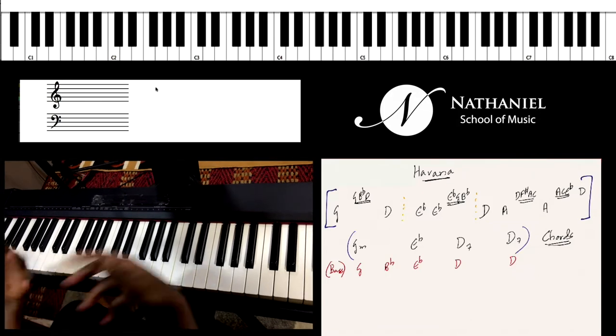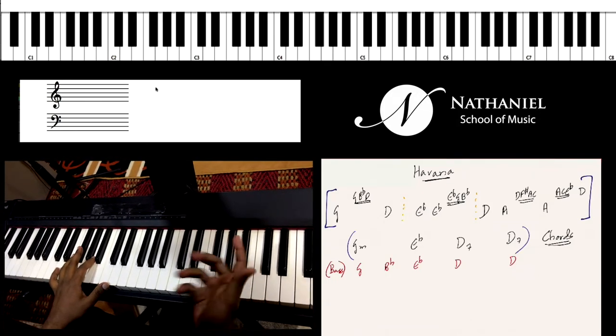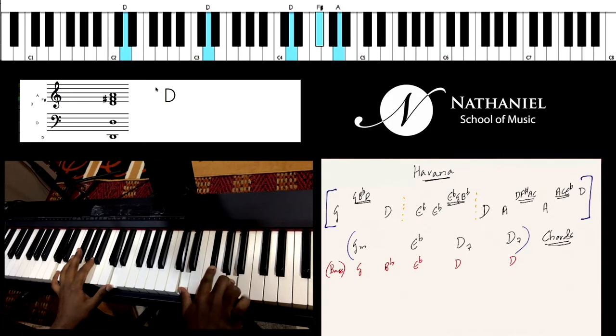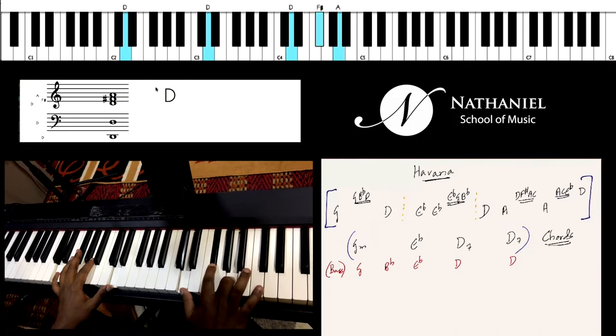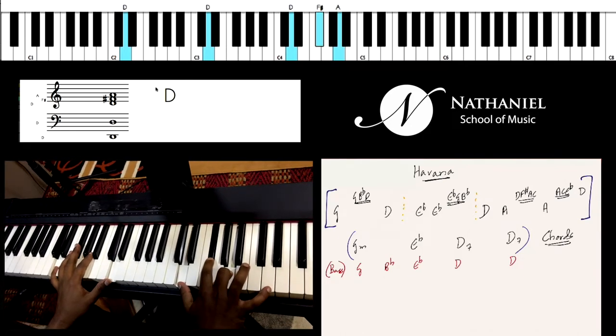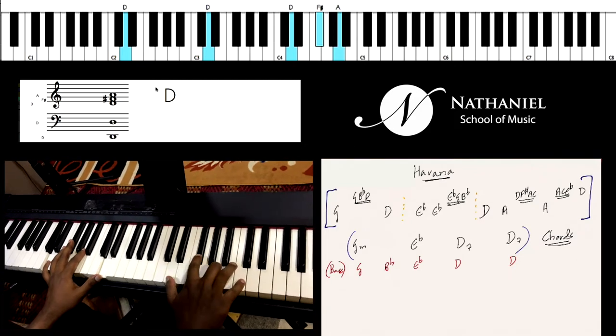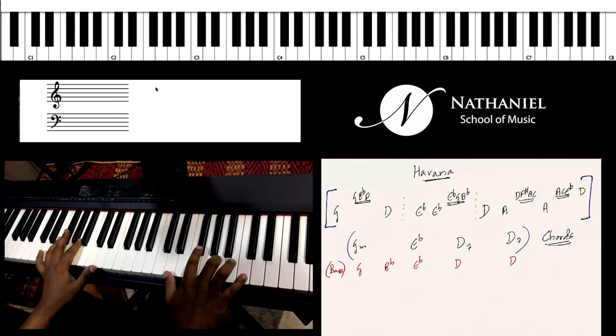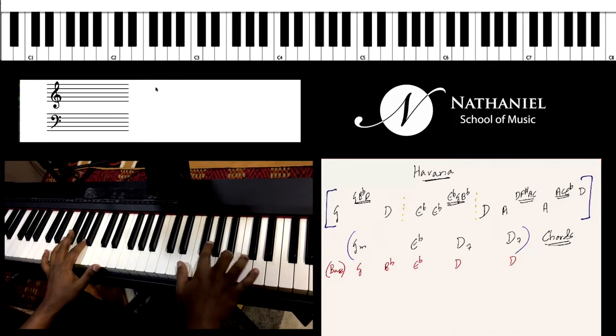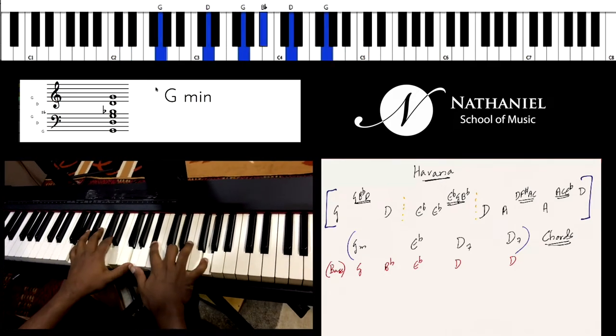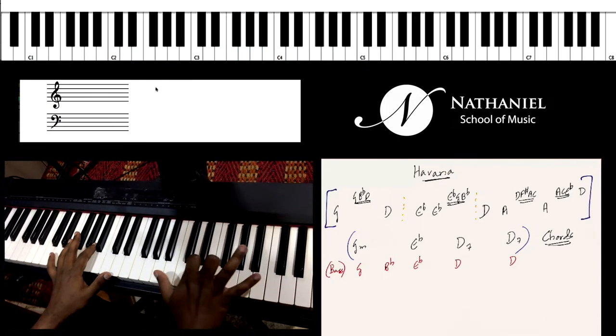D seventh is D major plus a C, which is a flat seven. To calculate a flat seven, you just take the octave and go down two steps - that's one step, two steps. This is D seventh. This is also what we call a dominant seventh chord, D dominant seventh.